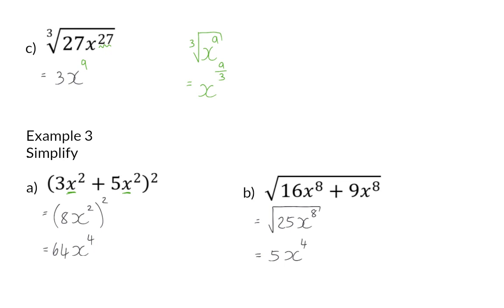In both these examples it is very important to remember to first add up before you determine the square or the square root. For example, if in B we determined the square root of each term separately first, we would get the square root of 4x to the power of 4 and then 3x to the power of 4, which when added gives 7x to the power of 4. This is definitely not correct — the square root acts as a bracket around everything on the inside and that has to be done first.